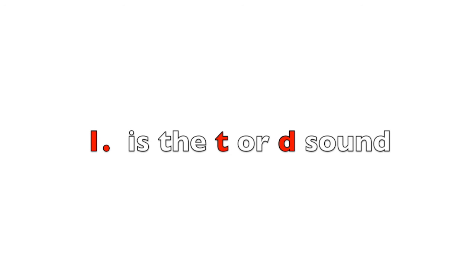Digit 1 is the T or D sound. Your lips, tongue, and teeth form essentially the same sound when you say T or D. They both pair up with digit 1. The memory aid: the T and the D each form only one downstroke.